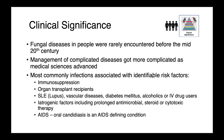Fungal diseases in people were rarely encountered before the mid-20th century — other than dermatophytes. As medical science advanced and we were able to treat previously fatal diseases, we created more severely immunosuppressed populations susceptible to otherwise low-pathogenicity organisms. Most commonly we now see infections in people with identifiable risk factors: immunosuppression, organ transplant recipients, lupus, vascular disease, diabetes, alcoholics, IV drug users, prolonged antimicrobials, steroids, cytotoxic therapy, and AIDS — oral candidiasis is actually an AIDS-defining condition.